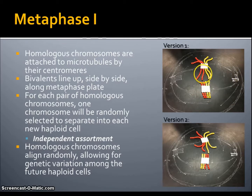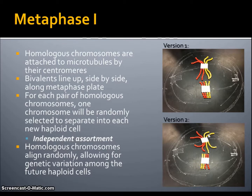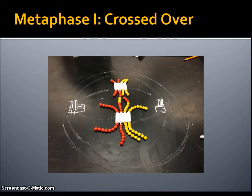Homologous chromosomes align randomly, allowing for genetic variation among future haploid cells. In version 1, both maternal chromosomes have aligned along one side of the metaphase plate and both paternal on the other side. However, in version 2, a maternal and a paternal have aligned on one side, while a paternal and maternal have aligned on the other side. Here is the photo of metaphase I for our crossed-over pair — they have lined up along the middle and are attached to their microtubules by their centromeres, and we can still see the crossing over.